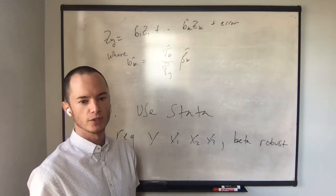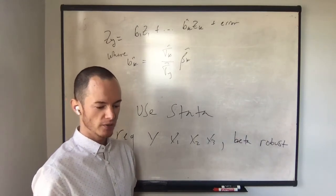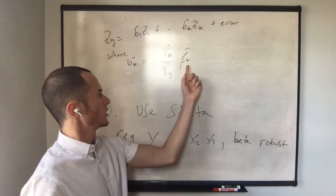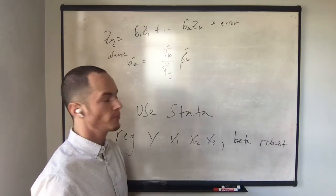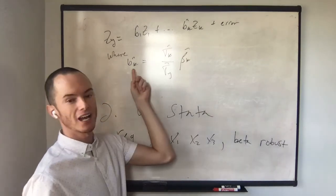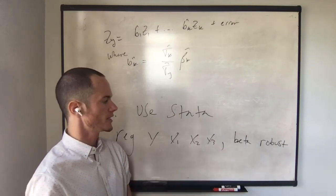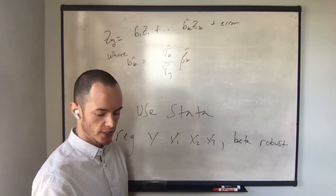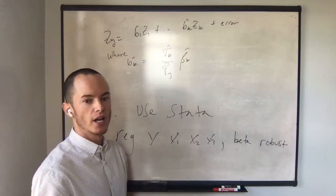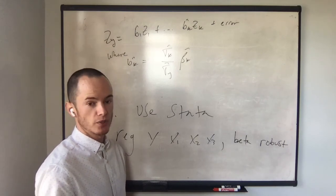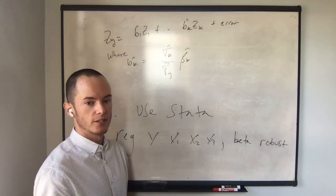Beta coefficients and standardized regression coefficients are one and the same. That nomenclature can be a little confusing, since we typically refer to beta as the OLS coefficient. I'm typically going to refer to b-hat as the standardized regression coefficient, but there is nomenclature that calls these the beta coefficients. These are very useful for interpreting the effect of x on y when x is measured in units that are not intuitive, and for comparing the magnitude of effects across explanatory variables. Thank you.